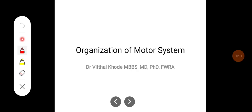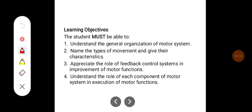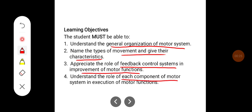Hello everyone. In this class we'll try to learn about the organization of the motor system. The learning objectives of this class would be to understand the general organization of the motor system, name the types of movement and give their characteristics, appreciate the role of feedback control system in improvement of motor functions, and understand the role of each component of the motor system in execution of motor functions.